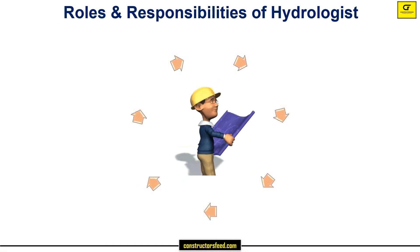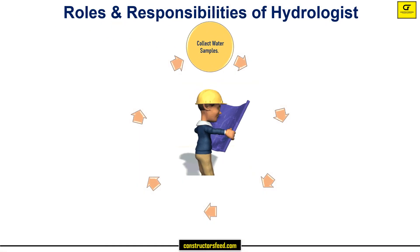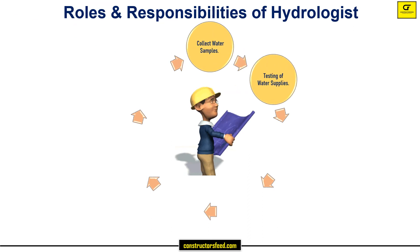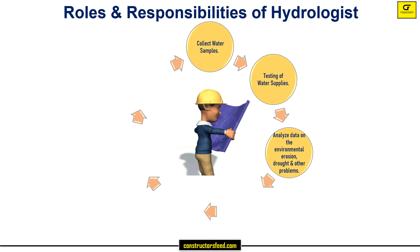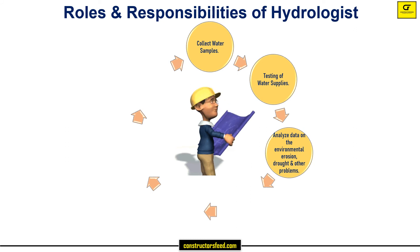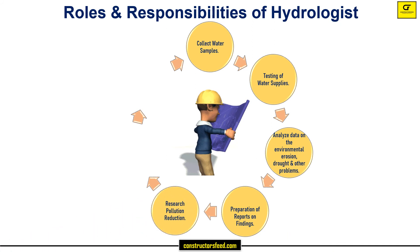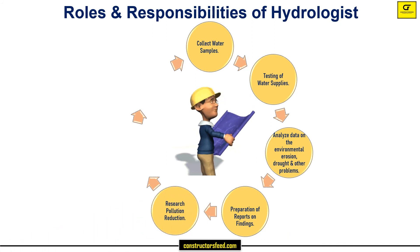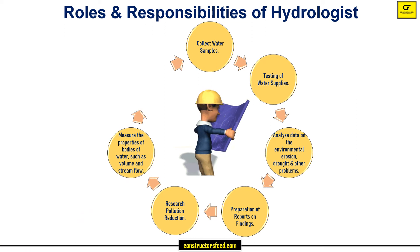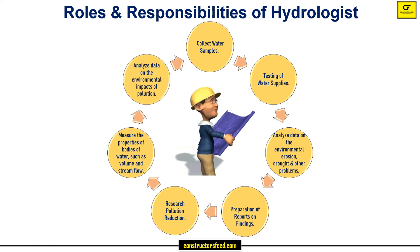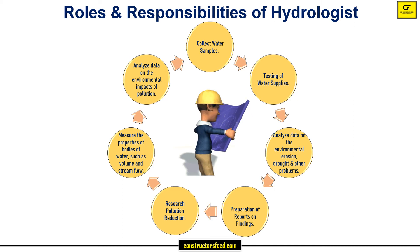Some of the roles and responsibilities of a hydrologist include: collecting water samples and testing water supplies, analyzing data on environmental erosion, drought and other problems, preparing reports on findings, researching pollution reduction, measuring properties of bodies of water such as volume and stream flow, and analyzing data on the environmental impacts of pollution and different population requirements.